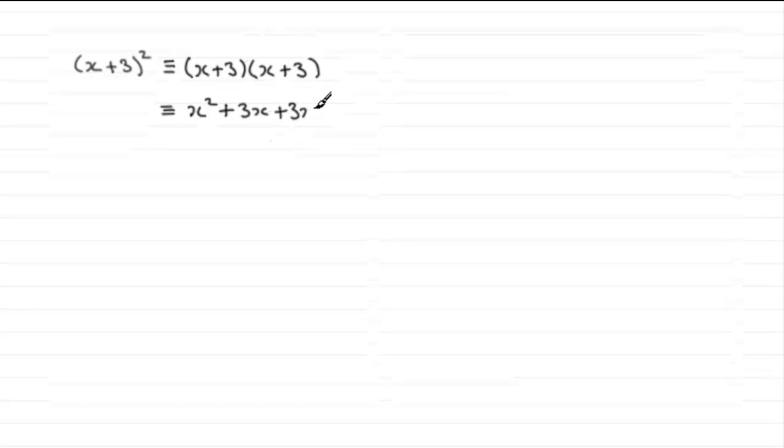and we've also got 3 times x again, another 3x. And then finally, we've got 3 times 3 which is plus 9. So this comes out at x squared for the first term, and then we've got twice the 3x, which is going to be 6x. And then we've got the 9 on the end, which was the result of squaring the 3.